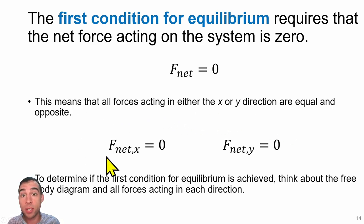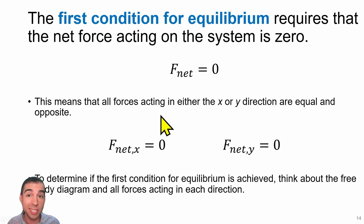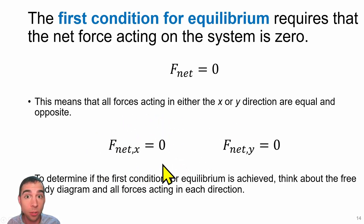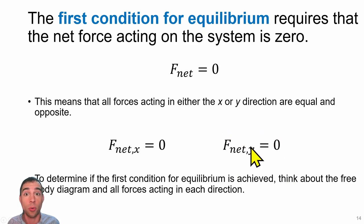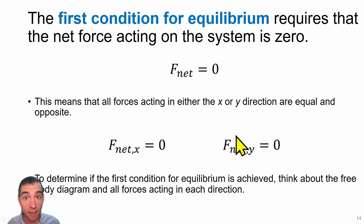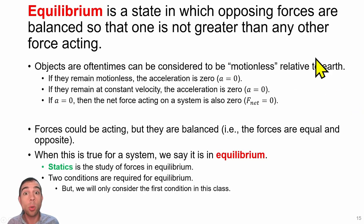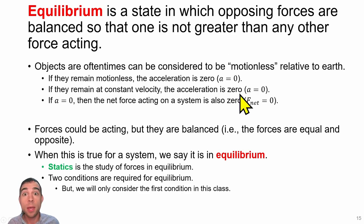Just like with two-dimensional motion, we have to worry about forces acting only in the horizontal direction and forces acting only in the vertical direction. These two do not affect each other. Equilibrium means the forces are going to be balanced and cancel out.